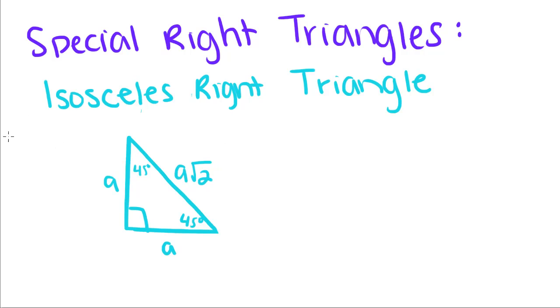An isosceles right triangle, and remember an isosceles triangle has two congruent sides, which would be this one and this one, so they have the same length. We're just going to call that length A.